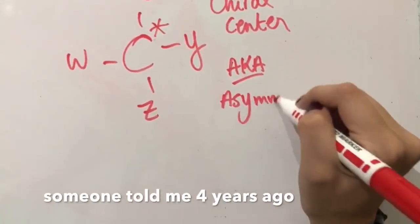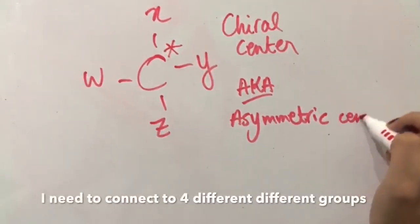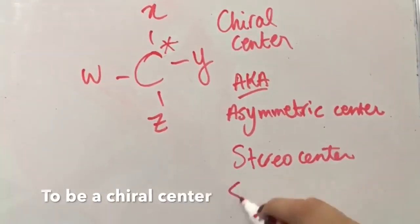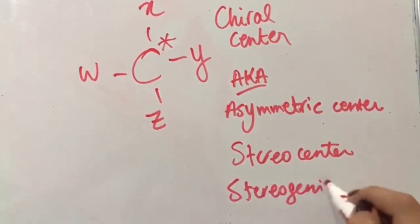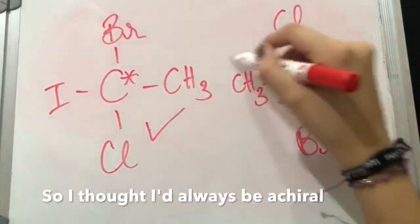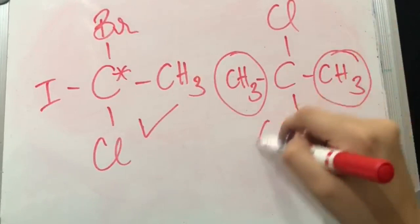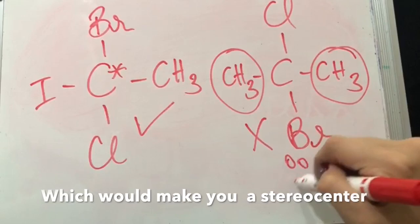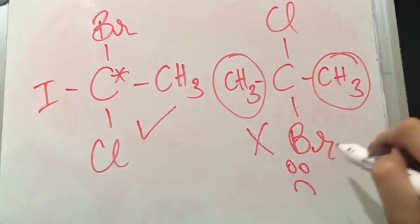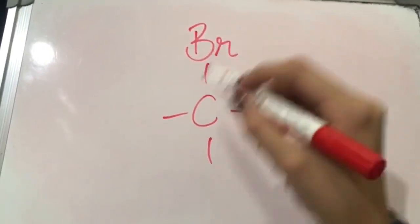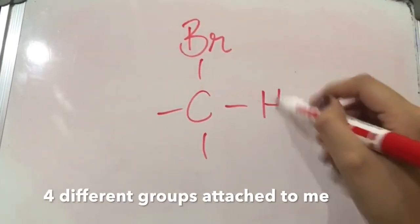Someone told me four years ago who I need to connect to four different groups to be a chiral center. You had four and I had three, so I thought I'd always be a chiral. You had none that were the same, which would make you a chiral center. And now I look around and I see four different groups attached to me.